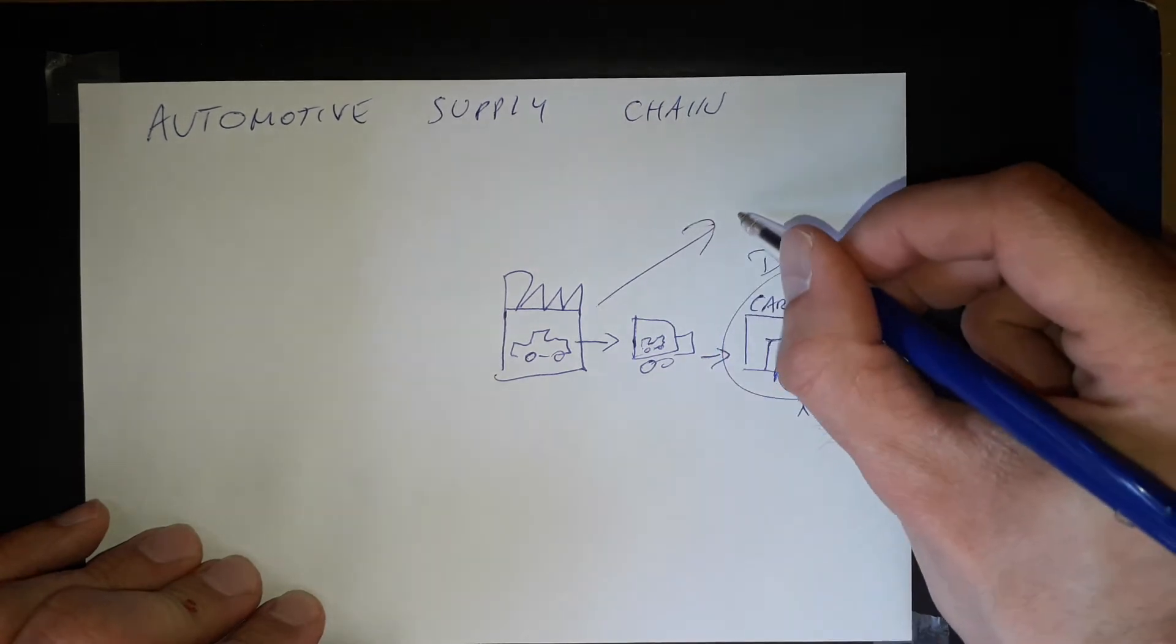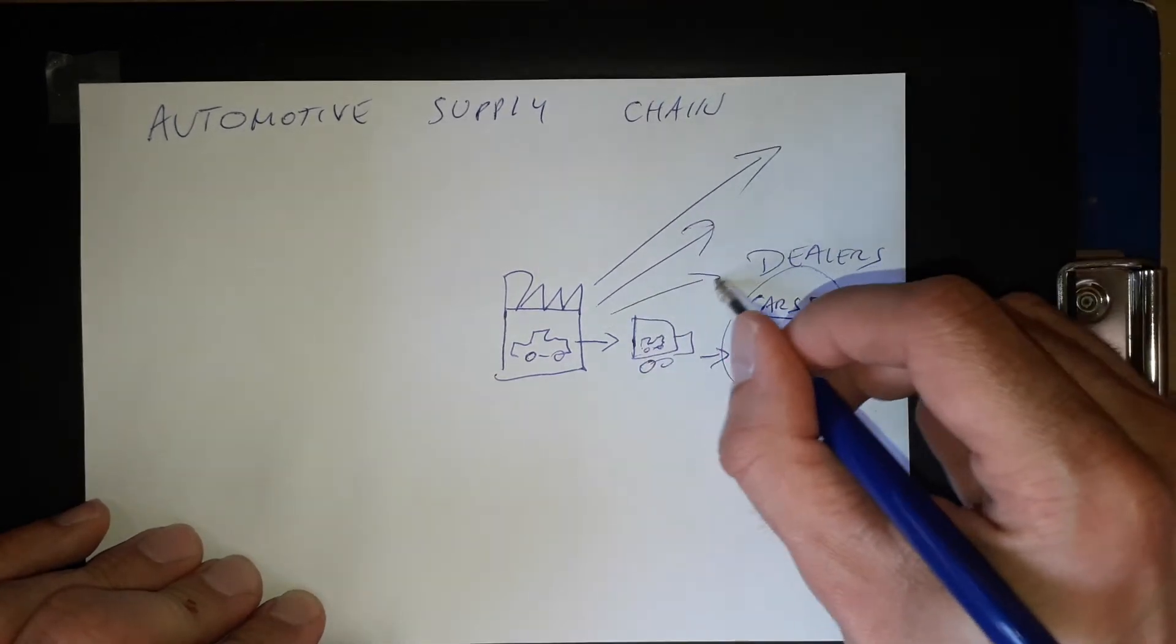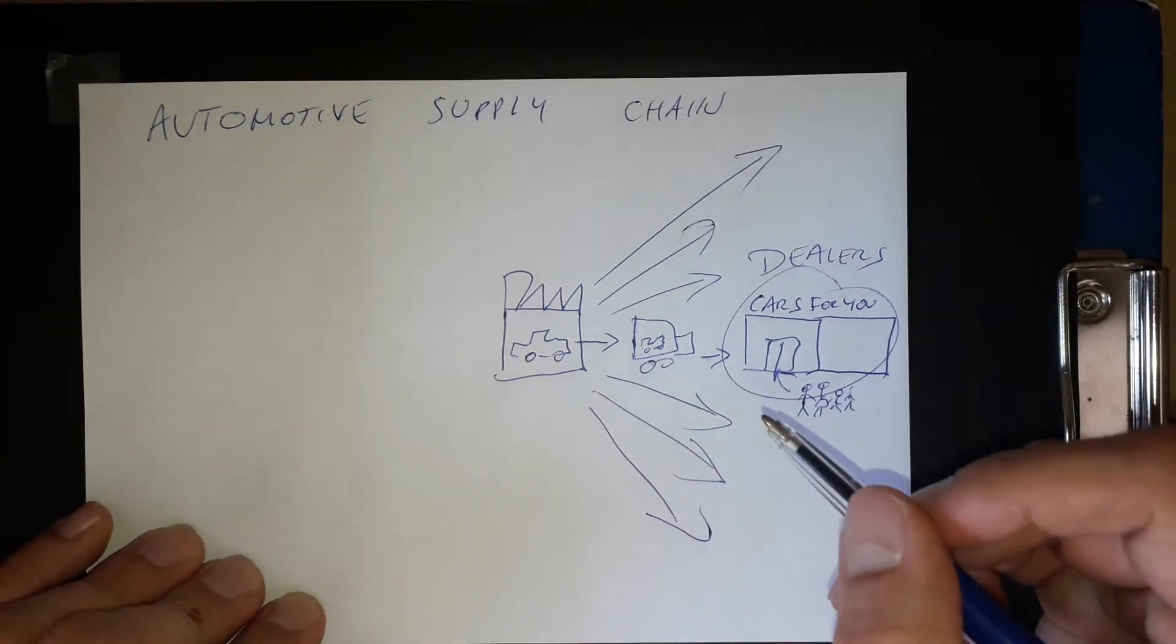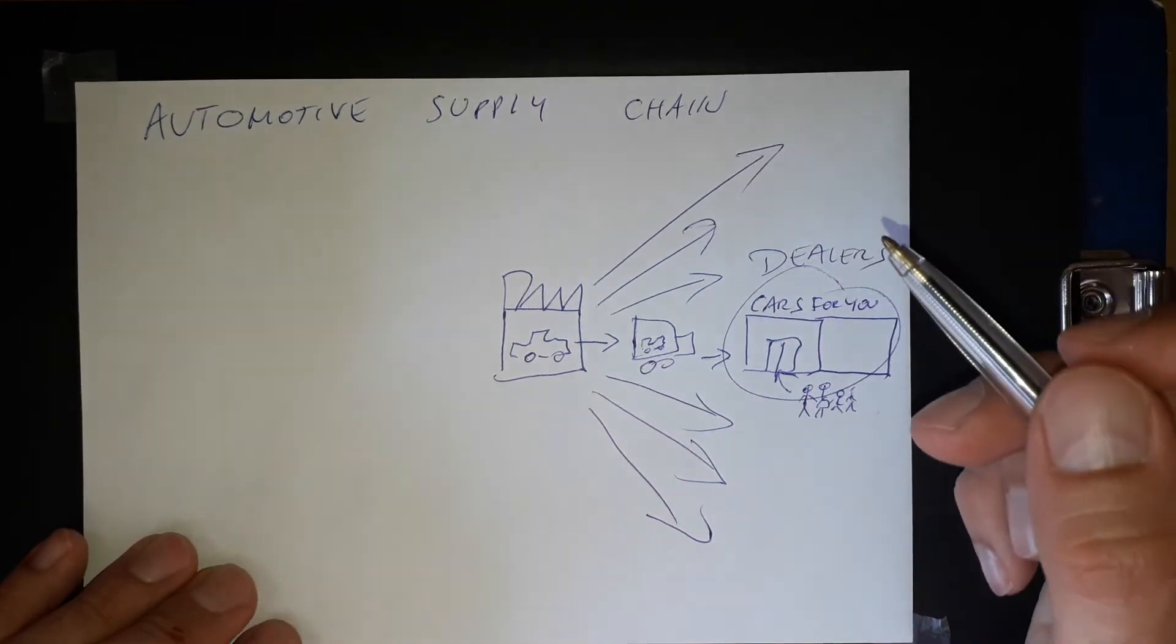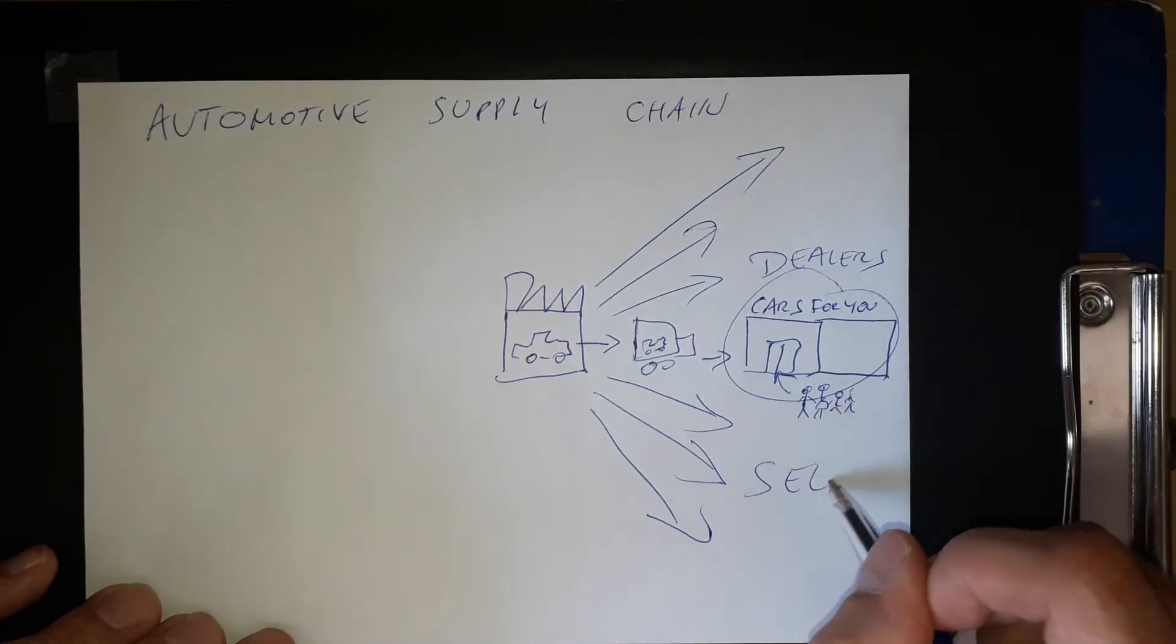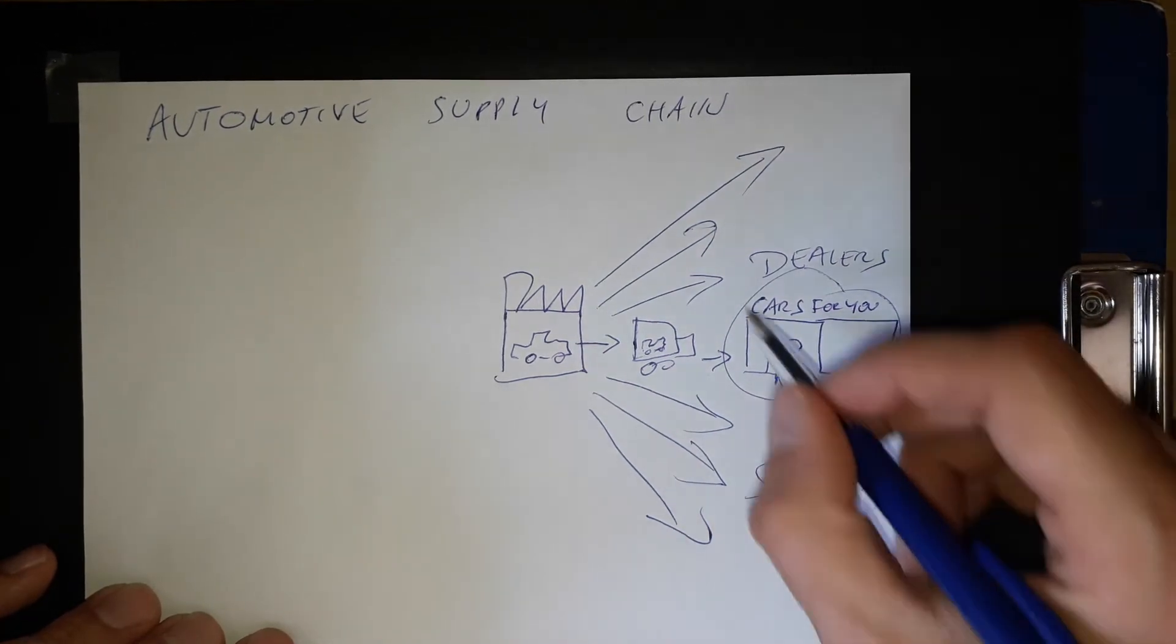Which is a network around the world. This is how it works to sell the cars. But then to produce it, of course, we need to have components. So this is how it works for the selling part, distribution, no problem.